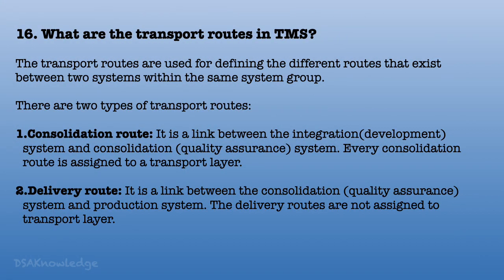What are the transport routes in Transport Management System? Transport routes define the different routes that exist between two systems within the same system group. There are two types: Consolidation route, which is a link between the integration or development system and the consolidation or quality assurance system — every consolidation route is assigned to a transport layer. Delivery route, which is not assigned to a transport layer.